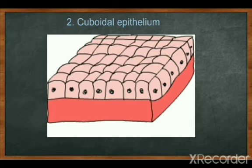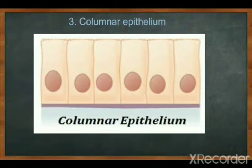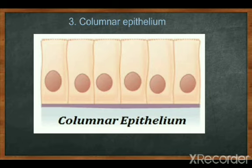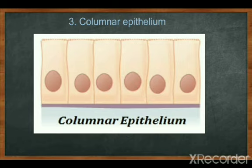The next one is columnar epithelium. As the name suggests, the cells are elongated and column-like or pillar-like. The cells are polygonal in surface view and are at right angles. The location is the alimentary canal, that is the digestive canal, and sensory organs. Its function is protective, secretory, absorptive, and sensory.